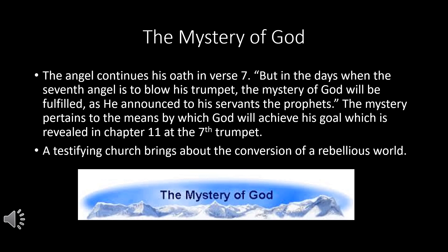The angel continues his oath in verse 7: 'But in the days when the seventh angel is to blow its trumpet, the mystery of God will be fulfilled, as he announced to his servants the prophets.' The mystery of God pertains to the means by which God will achieve his goal, which was revealed at the seventh trumpet in chapter 11. A testifying church brings about the conversion of a rebellious world.